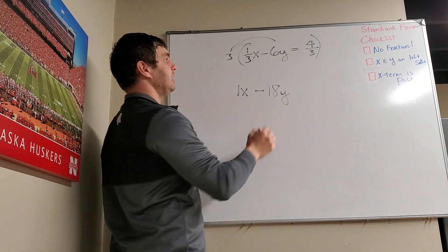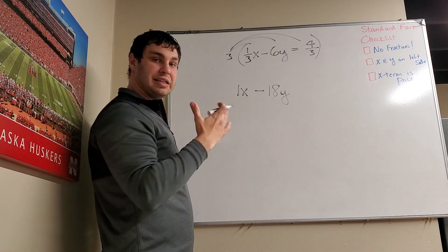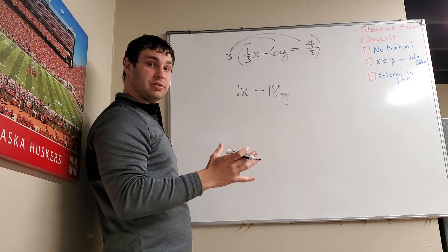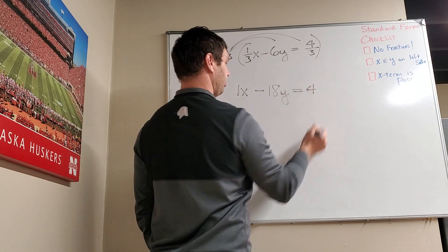And 3 times 4 thirds, again, the top and bottom number are going to cancel. So those 3s will cancel, you're left with the top 4. So it just equals 4.